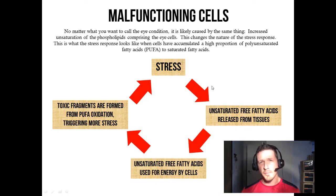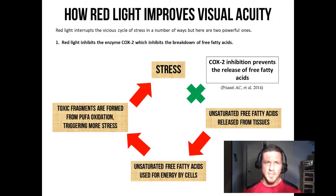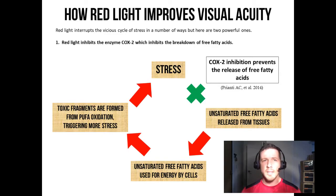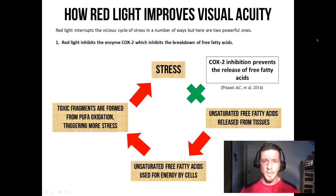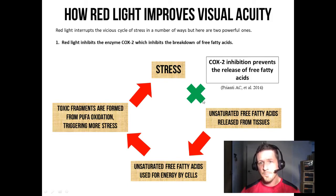So the question is: how can red light therapy interrupt this vicious cycle of stress and help the cells of the eyes heal? Red light interrupts the vicious cycle of stress in a number of ways, but here are two powerful ones. Red light inhibits the enzyme COX-2, which inhibits the breakdown of free fatty acids. During stress, COX-2 is produced, triggering the release of free fatty acids into the bloodstream — and red light inhibits the production of COX-2, thereby preventing that release.